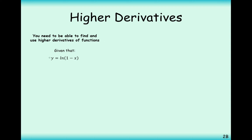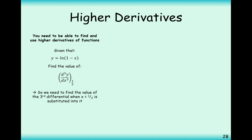Here's a question: if y equals ln(1 − x), find the value of d³y/dx³ evaluated at x = ½. We need to differentiate three times, so the first thing we'll do is differentiate using the ln rule.